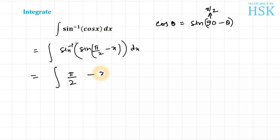This pi by 2 is constant, so integration of constant would be equal to pi by 2 times x. And this x is x raised to the power of 1, so this will be x to the power of 1 plus 1, 2 upon 2, plus c. So this is my required answer.